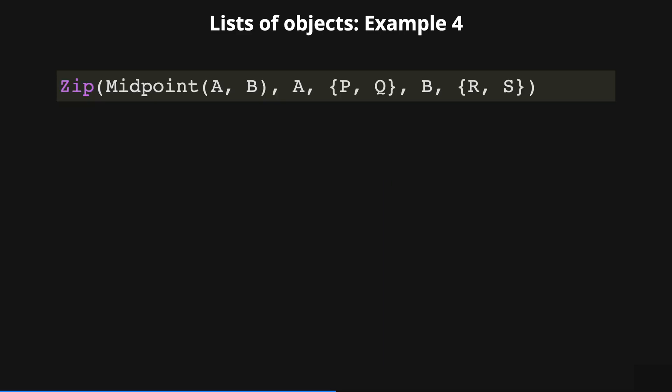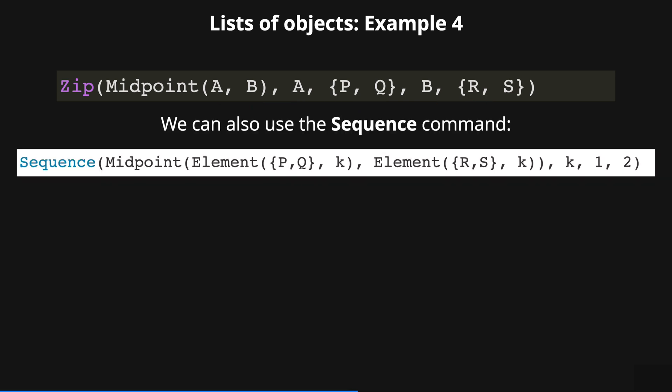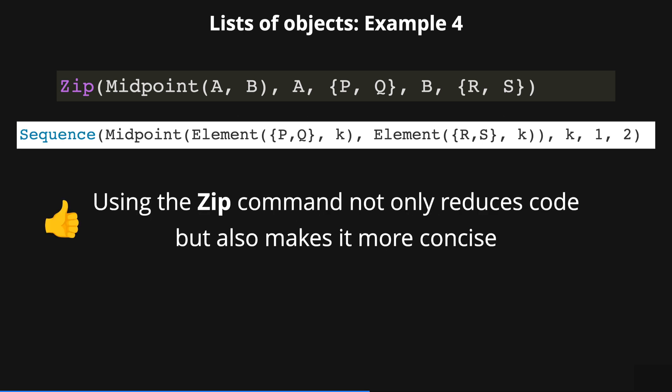Therefore, we obtain a list of midpoints obtained by substitution of variables in the expression by elements of the corresponding lists. We can also use the sequence command but we need to introduce the element command. Thus, in this example, using the zip command not only reduces the code but also makes it more concise.